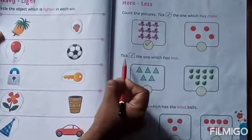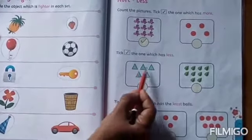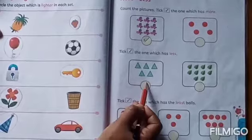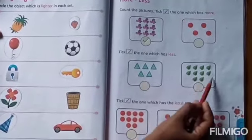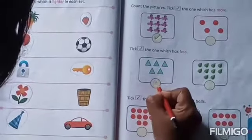Then next, tick the one which has less. This picture, first picture is less. Then this picture, more. And tick, less.